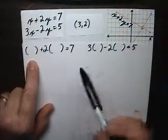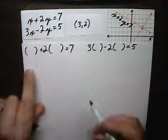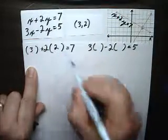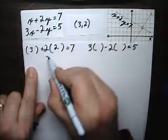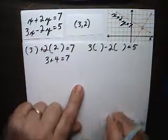I've set these equations up for substitution. This is the first equation with empty parentheses for the x and y. I can put the 3 in here for the x and the 2 in there for the y. And this becomes 3 plus 4 equals 7. And you can see that that checks.